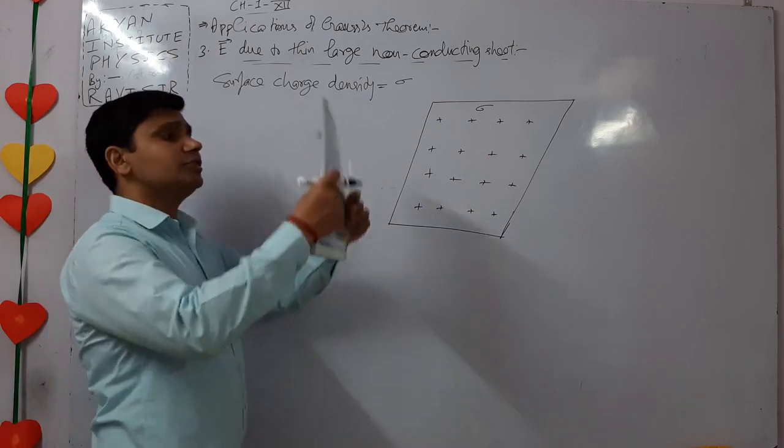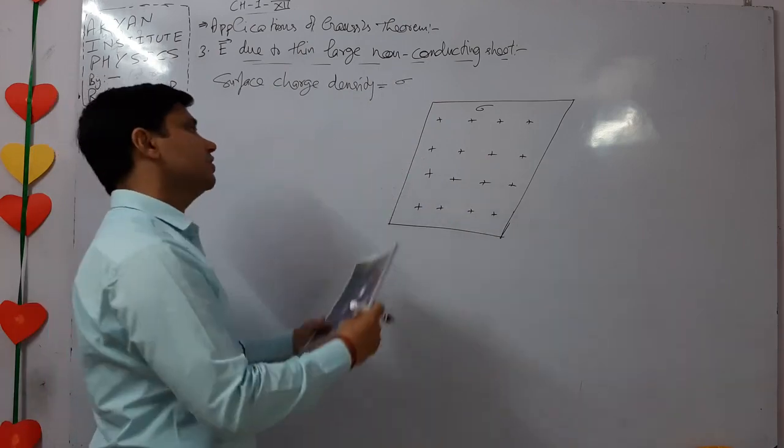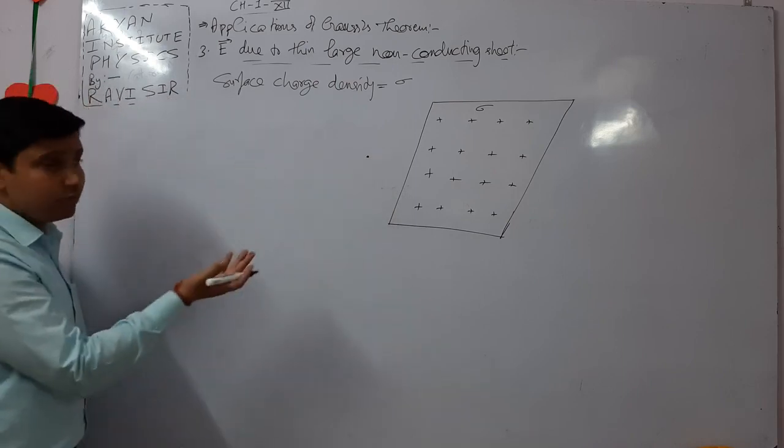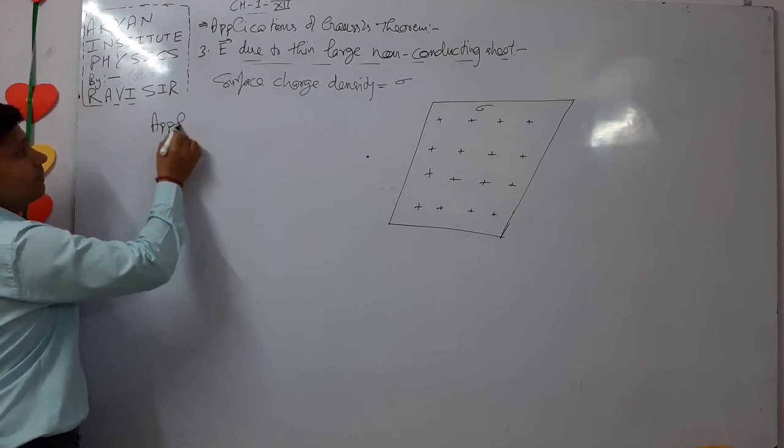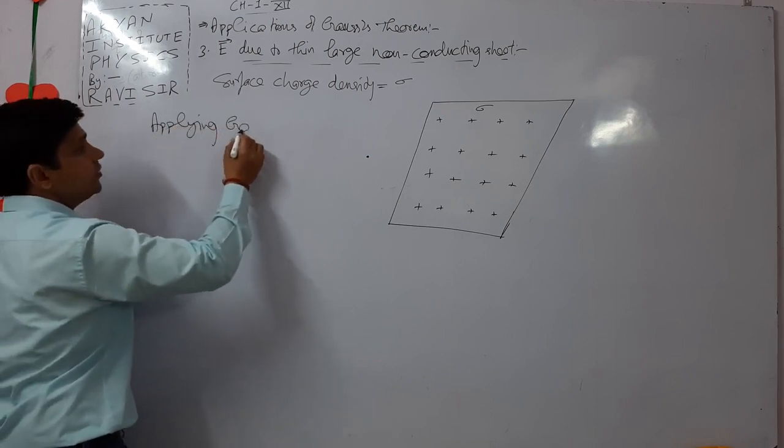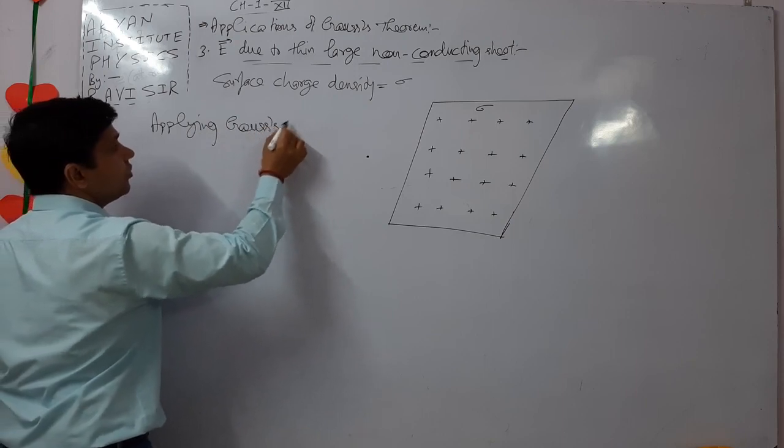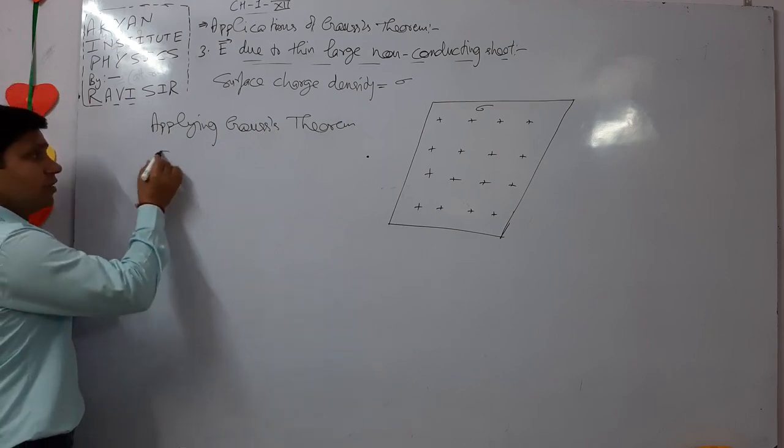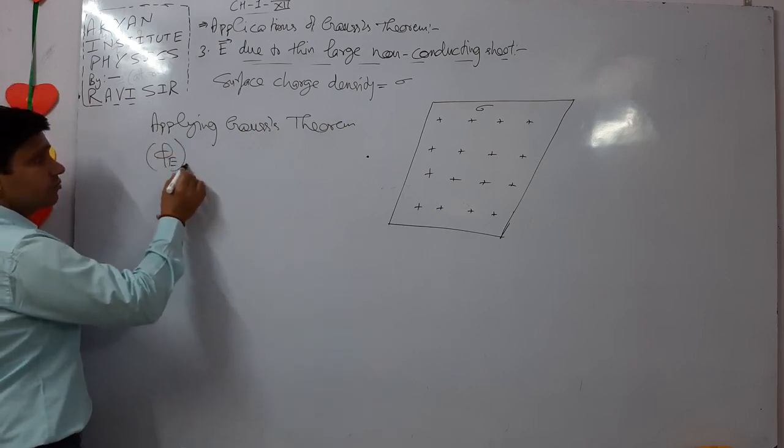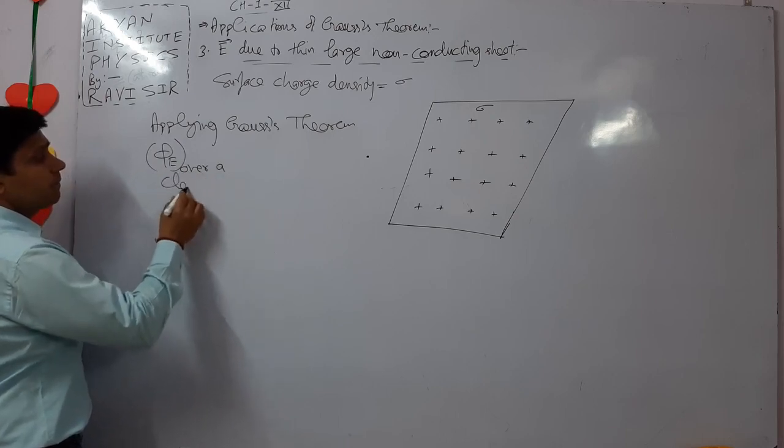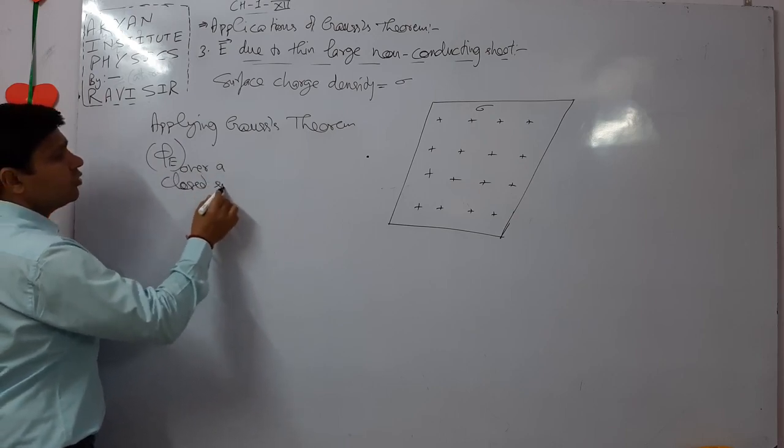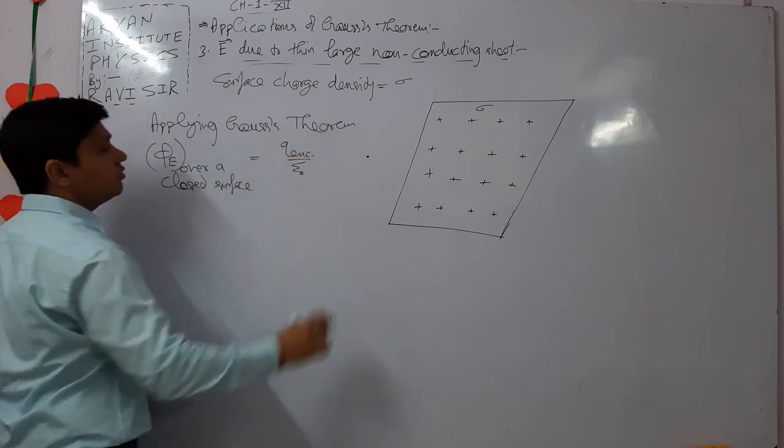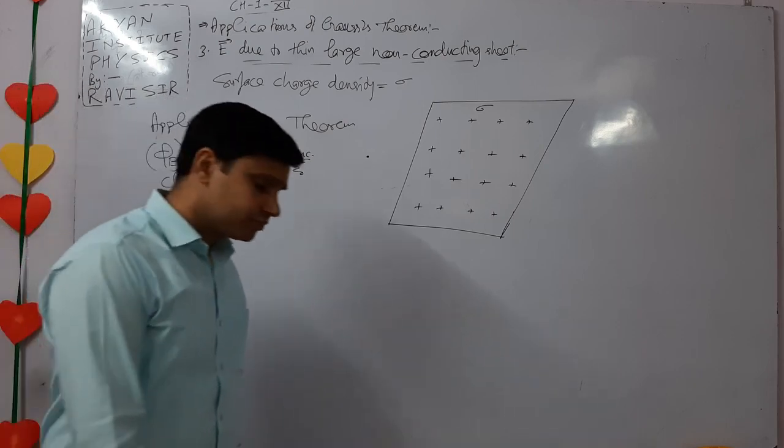Applying Gauss theorem. What does it say? It says electric flux over a closed surface is always equal to Q enclosed by epsilon naught.